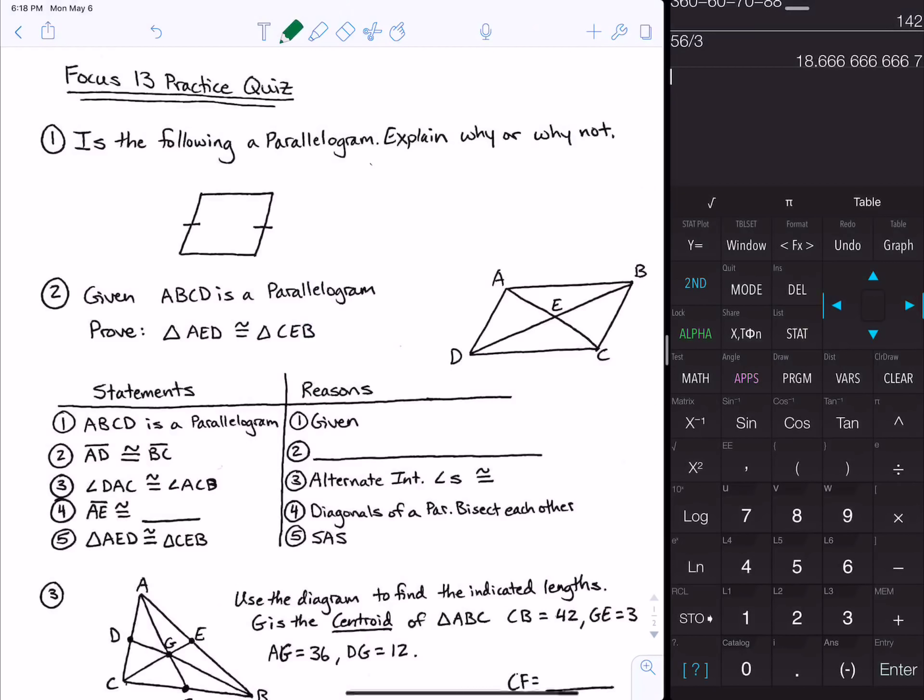This is your Focus 13 Practice Quiz. In number one it says, is the following a parallelogram? Explain why or why not. So in this picture I see I have one pair of congruent sides. That is not enough to prove this is a parallelogram. So I'm going to say no. The figure only has one pair of opposite sides that are congruent.